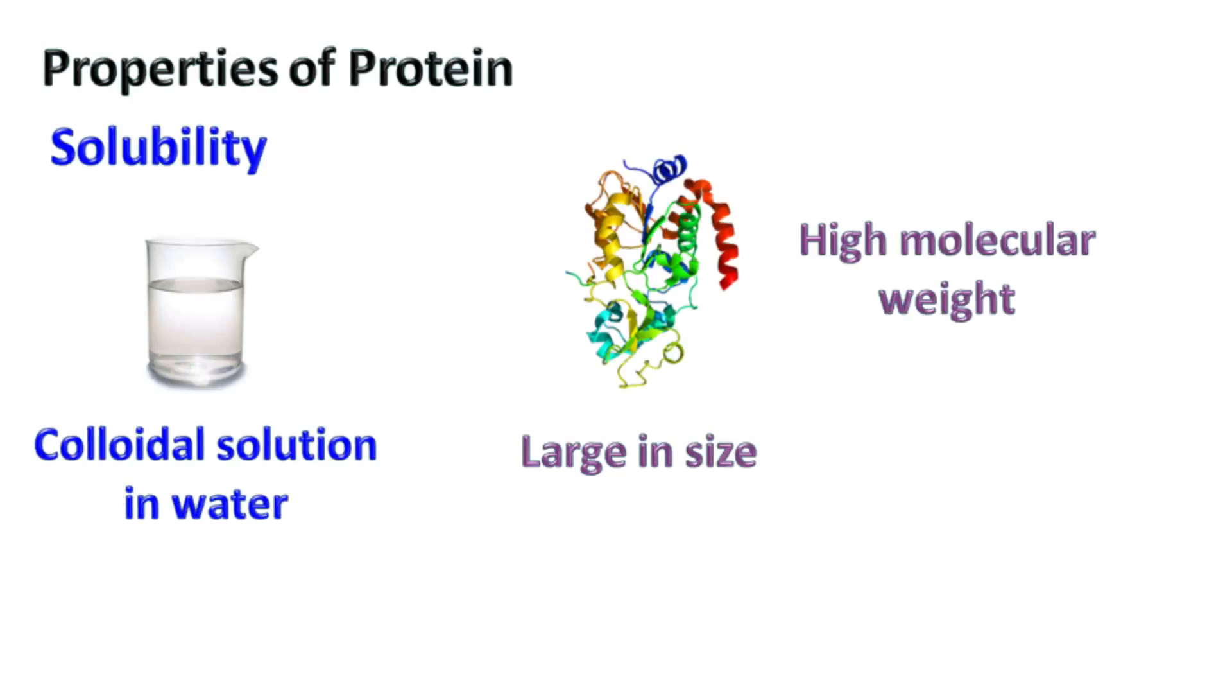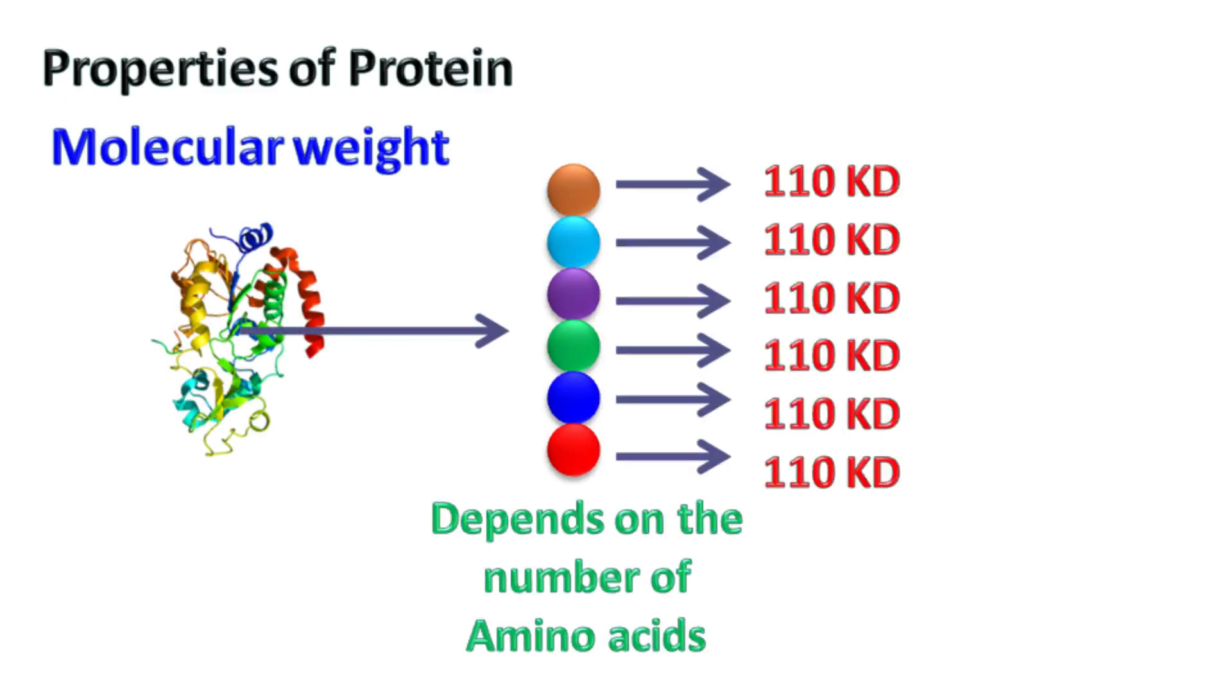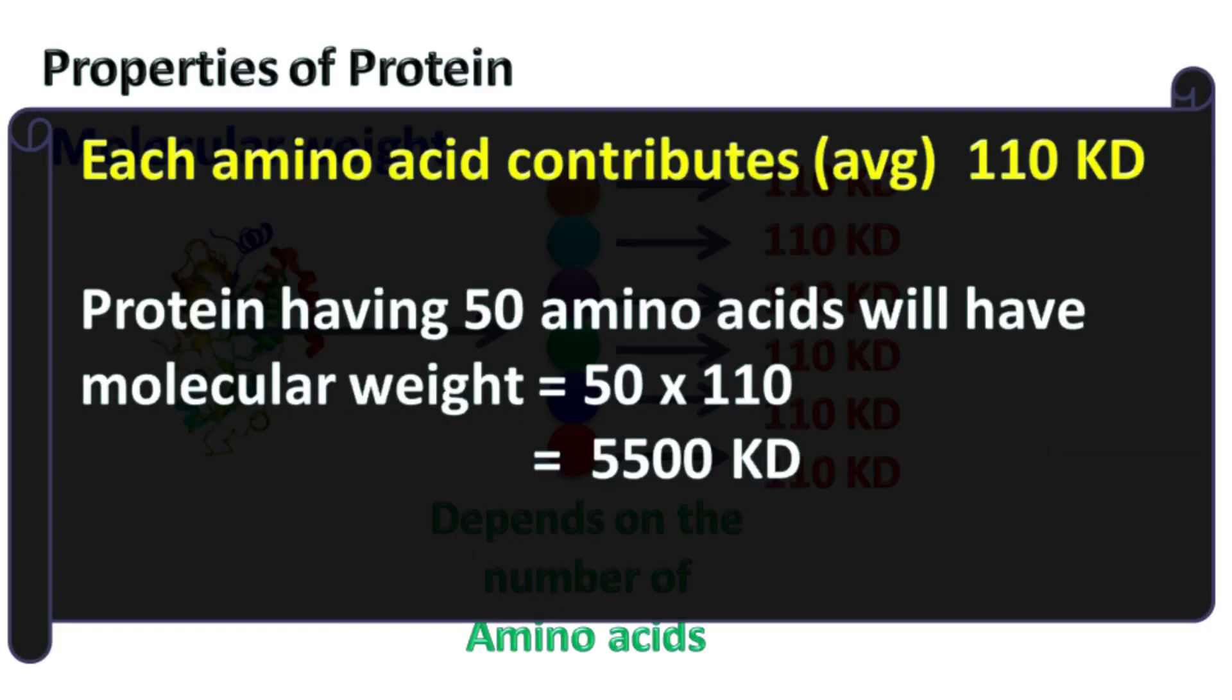The molecular weight of protein depends on the number of amino acids present in the protein. Each amino acid contributes to about a molecular weight of 110 kilodaltons. So if the protein has 50 amino acids, it will have a molecular weight of 5,500 kilodaltons.